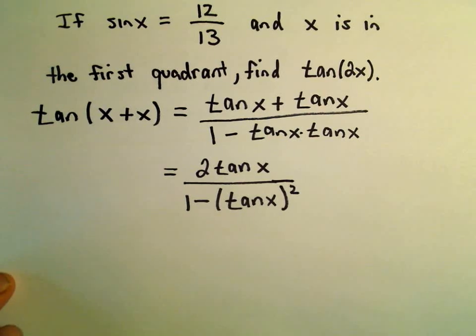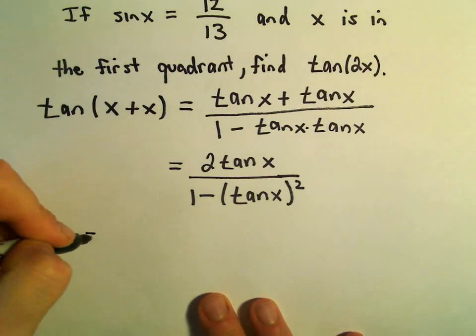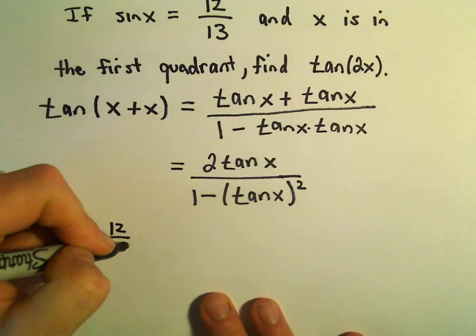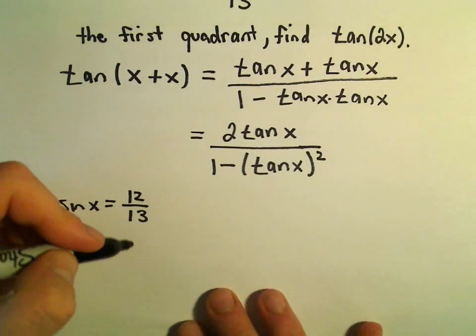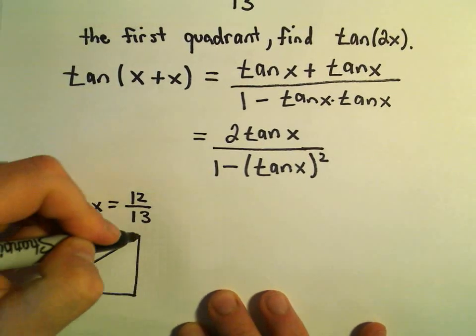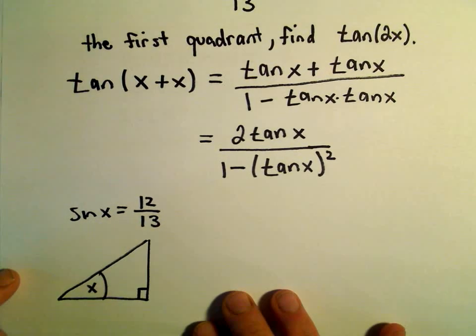So we're given that sine of x is 12 over 13, so I'm just going to make a little right triangle based on that, and then we'll deduce the value of tangent of x from that. So here's my little triangle. Here's going to be my angle x. It's a right triangle.